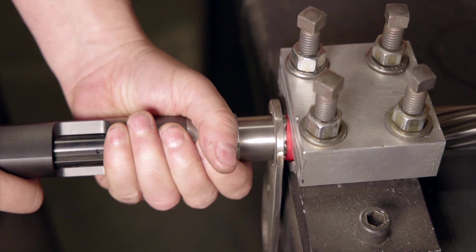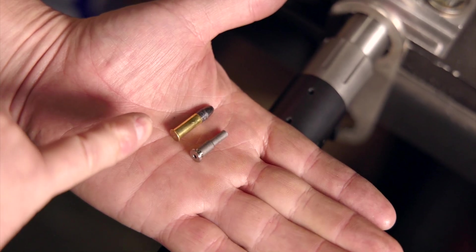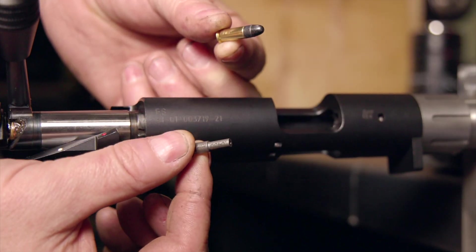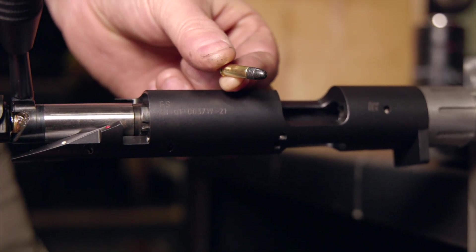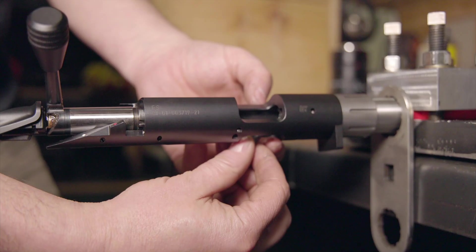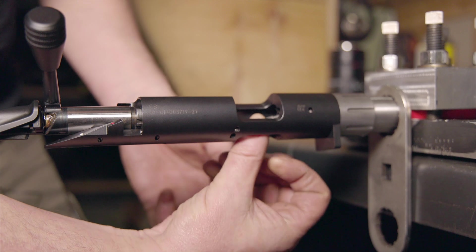At this point you would probably want to use the lot of ammunition that you're going to be shooting instead of the go gauge. But obviously we're indoors, so using live ammo is not a good idea, so we're going to use the go gauge again.